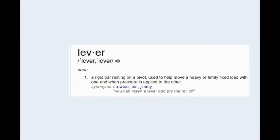A lever is a rigid bar resting on a pivot used to help move a heavy or firmly fixed load with one end when pressure is applied at the other. All right, so we're applying pressure on one end and we're moving a heavy or firmly fixed load. That's our lever.